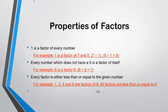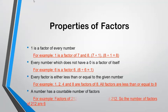Number four, and the last: A number has a countable number of factors. For example, factors of 212 are 1, 2, 4, 53, 106, and 212, so the number of factors for 212 are 6.